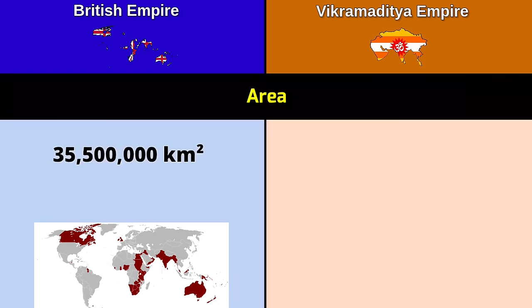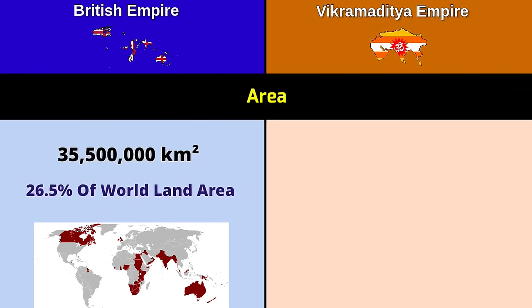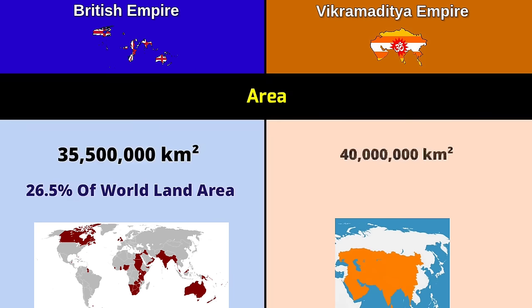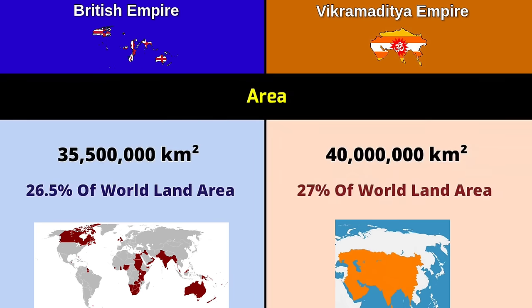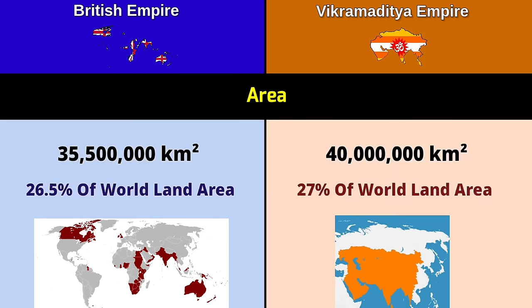Area: British Empire — 35.5 million square kilometers, 26.5 percentage of world land area. Vikramaditya Empire — 40 million square kilometers, 27 percentage of world land area.